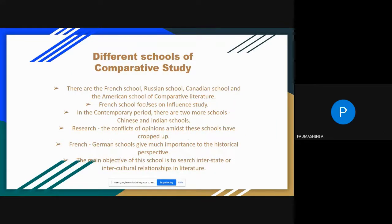There are many different schools of comparative study. The first school is the French school, then the Russian school, Canadian school, and the American school. In the contemporary time period, two more schools — Chinese and Indian schools of comparative literature — have become popular. The French and German schools give much more importance to the historical perspective, and their main objective is to search interstate or intercultural relationships in literature.